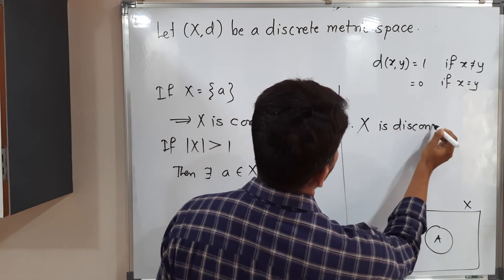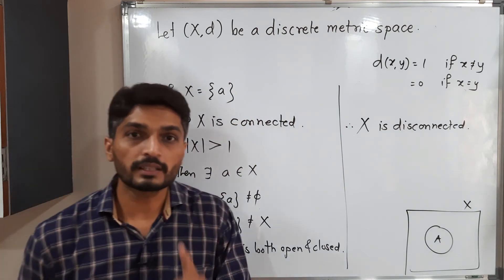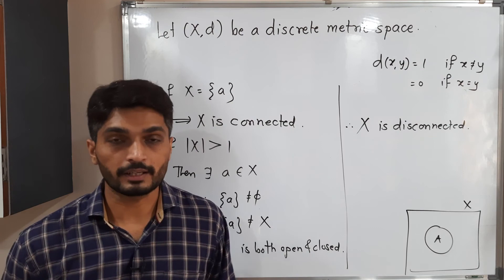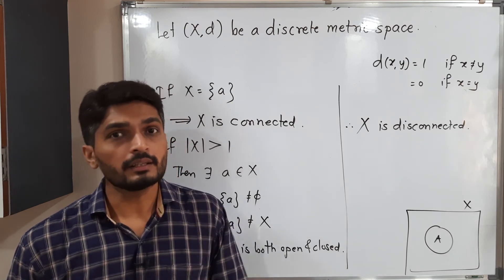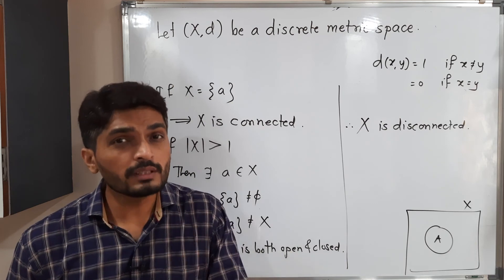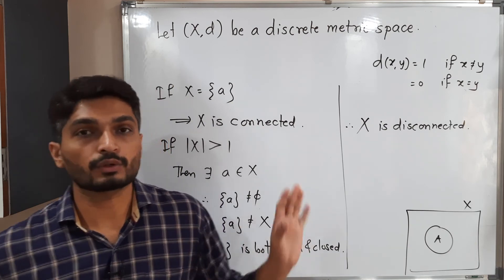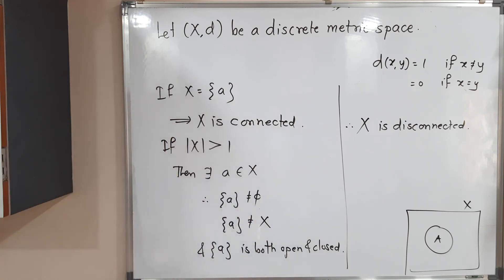What is our conclusion? In a discrete metric, if it has only one element, if it is a singleton set, then it is connected. Otherwise, it is disconnected. In other words, in a discrete metric space, only singleton sets are connected. All remaining sets, or if the original metric space has more than one element, it is disconnected. The example is over. You can make a screenshot of it. Thank you, bye-bye.